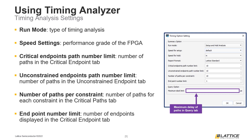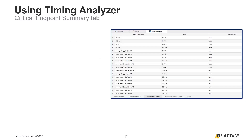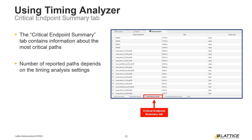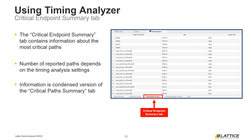We are now going to discuss some of Timing Analyzer's additional tabs. The first tab we will review is the Critical Endpoint Summary tab. The number of paths reported in this tab depends on the Timing Analysis settings. By default, the endpoints of the 10 most critical paths in a Radiant project will be reported. If fewer than 10 critical endpoints are found, only the critical paths that were found will be reported. This tab displays only the Slack and Critical Endpoint of each path, and the rightmost column details the type of timing analysis performed to obtain the critical path.